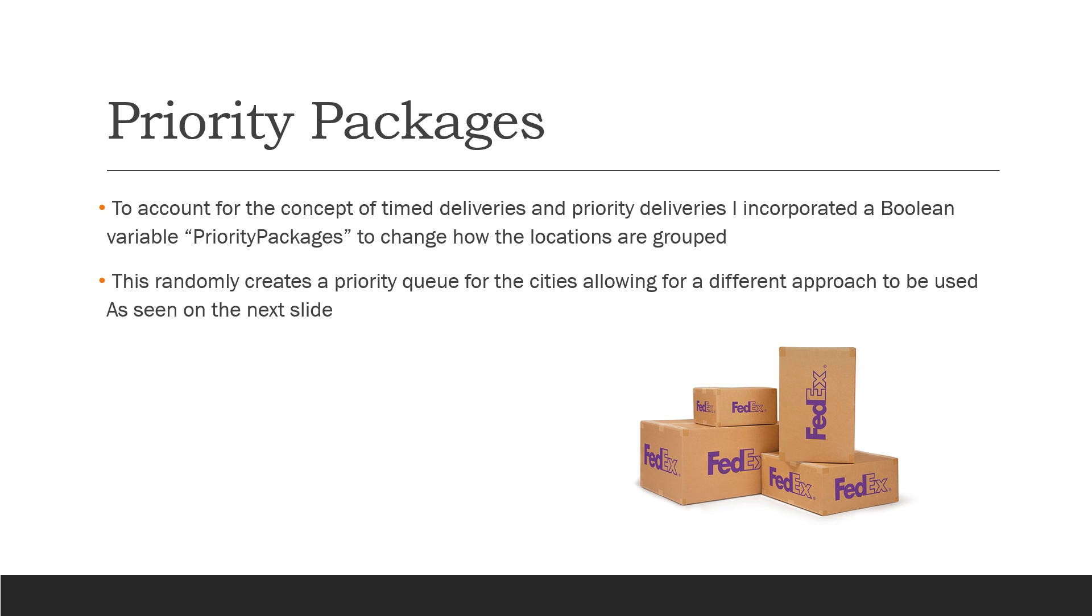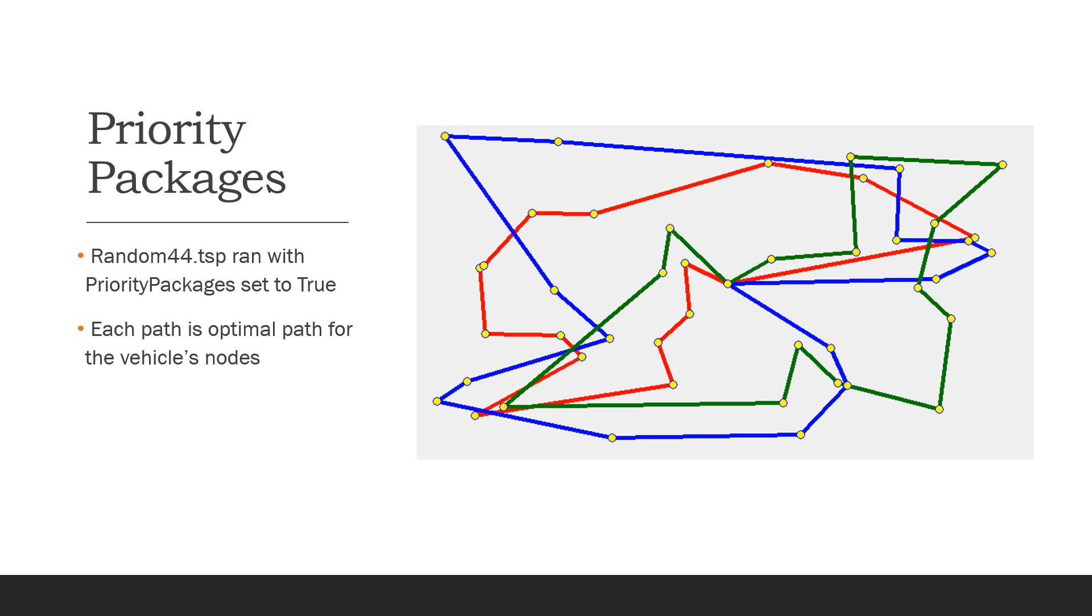The last thing I'll cover is priority packages, which is something I added in after the initial report. This is to account for the concept of time deliveries and priority deliveries. I did that by incorporating a boolean variable called priority packages to change how the locations are grouped. What this does is it randomly creates a priority queue for the cities, allowing for a different approach to be used. By randomly prioritizing the deliveries or timing the deliveries, it allows for more variety than just the XYs, where almost every single time with a certain number of trucks you will break it up into the same groups.